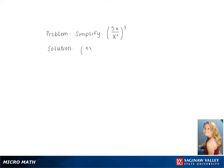To simplify 5x over x squared, all cubed, we start by simplifying the inside of the parentheses, subtracting the exponents. This gives us 5x to the 1, all cubed.